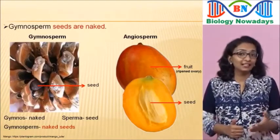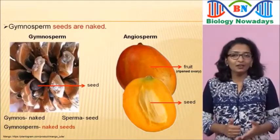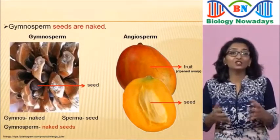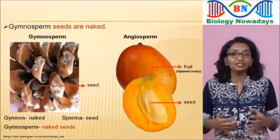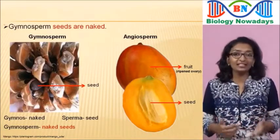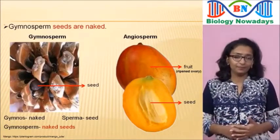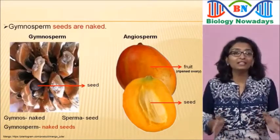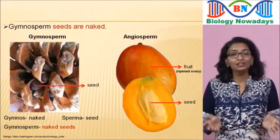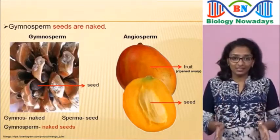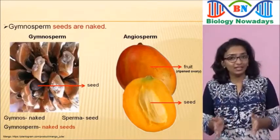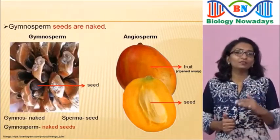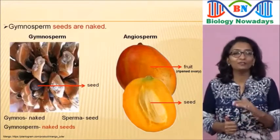In pteridophytes like Selaginella, we saw heterospory and also the retention and germination of the megaspore into a female gametophyte inside the megasporangia. These were the first steps of seed habit. However, pteridophytes didn't form seeds, whereas in gymnosperms you see the completion of this phenomenon of seed habit through the formation of seeds.